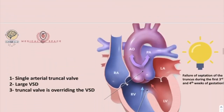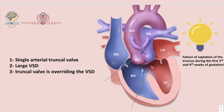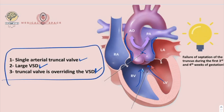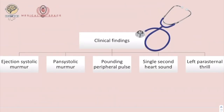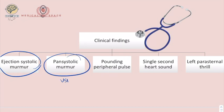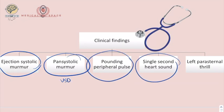In Truncus Arteriosus, there is failure of septation of the truncus during the third and fourth weeks of gestation. The aorta and pulmonary artery arise from the same artery, and there is a single arterial truncal valve and a large ventricular septal defect, with the truncal valve overriding the VSD. The clinical findings are ejection systolic murmur, pansystolic murmur if there is a VSD, a bounding peripheral pulse, a single second heart sound, and a left parasternal heave.